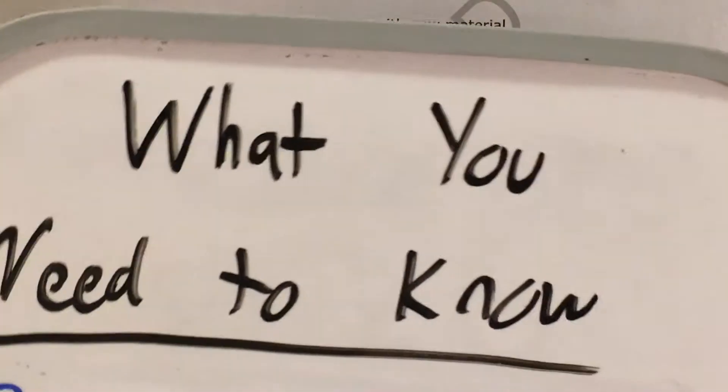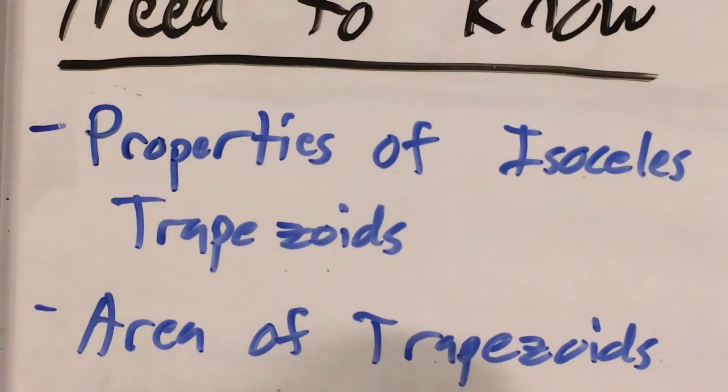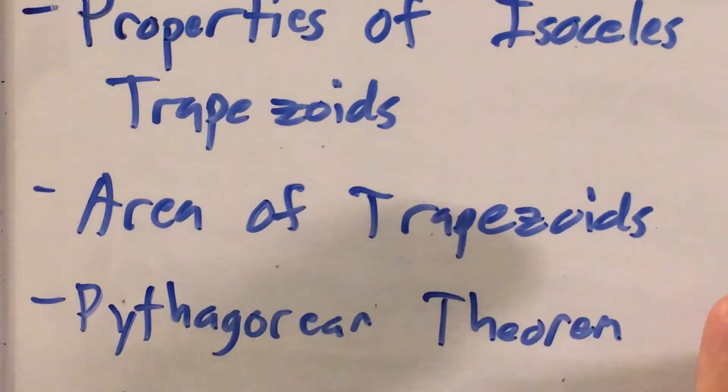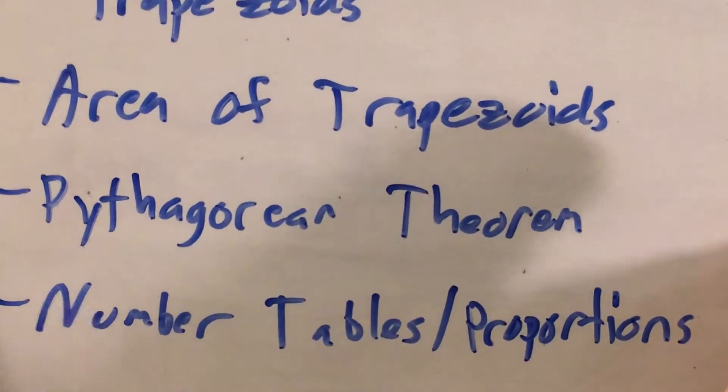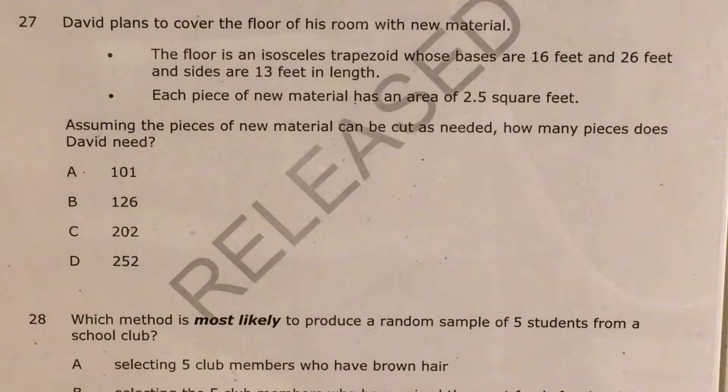Now this question tests a lot of smaller skills, like the properties of an isosceles trapezoid, the formula for the actual area of any trapezoid, the Pythagorean theorem, and using number tables and proportions. We're going to get to all these skills as we go, but they're all going to come out in small ways. Let me start by getting out my big whiteboard and drawing this trapezoid so we can move forward with this problem.